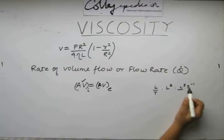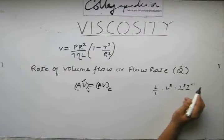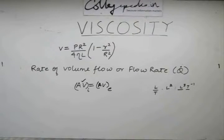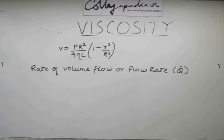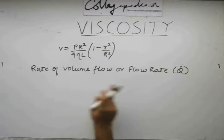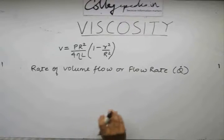L cube is the dimension for volume, t minus 1 is the dimension for frequency. So this gives us the volume flow rate. Let us do the same here also. However, we cannot write a into v directly for both ends because of the fact that velocity is changing radially from the center to the periphery.